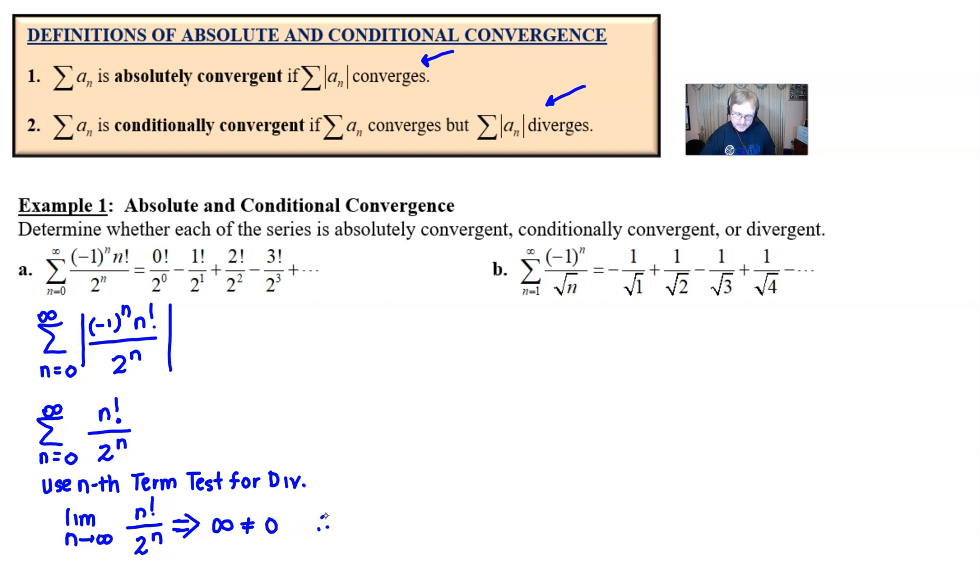It might take a few n's for that to happen, but we've talked about that in a previous video. So this guy here is going to equal or approach infinity. Well, infinity is not equal to zero, which is a good thing for the nth term test. So therefore, that means that the summation of the absolute value of this nth term expression diverges.